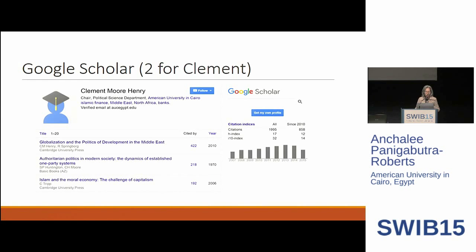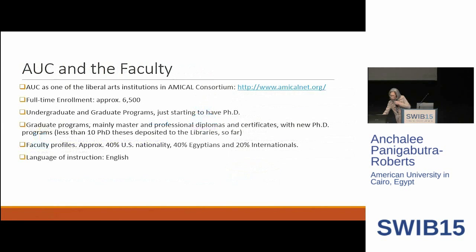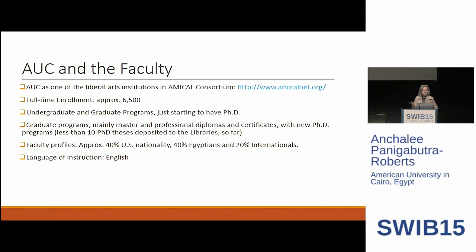Clement has two profiles — a double identity. Just to make sure you understand: AUC is not a research institute, but it has research labs and faculty with some high profiles. It has about 6,500 in enrollment, undergraduate and graduate, with some new PhD programs. So it's not really high-ranking, but that's enough of the faculty to get into LC and VIAF.